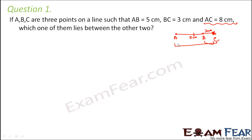So only if C is here, then AC will be 8 and at the same time BC would be 3. So if BC is 3 cm, then how much is AC? AB plus BC that is 5 plus 3 which is 8 and that is what is given in the question. So that means who lies in between? B lies between A and C.